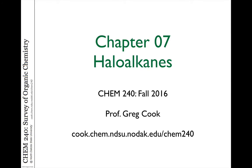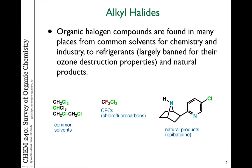In today's video, we're going to talk about haloalkanes — organic molecules that contain the halogens fluorine, chlorine, bromine, and iodine. These types of compounds that contain halogen atoms are ubiquitous in our society and in the environment. Some of them are man-made, and some of them are natural products.